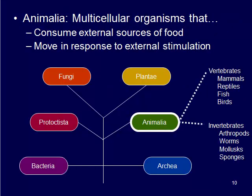The last category is animalia. These are multicellular organisms that consume external sources of food and move in response to external stimulation. This includes us, birds, sea stars, worms, and fish. We can divide animalia into vertebrates or invertebrates — vertebrates have a spinal cord and backbone, and invertebrates do not.